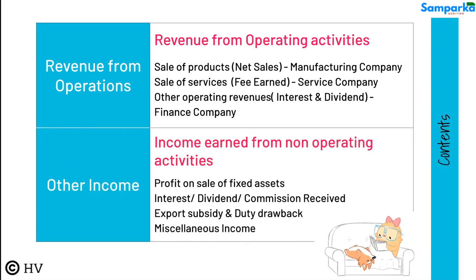Other Income indicates income earned from non-operating activities. It may include profit on sale of fixed assets, interest, dividend, commission received, export subsidy and duty drawback, and miscellaneous income.